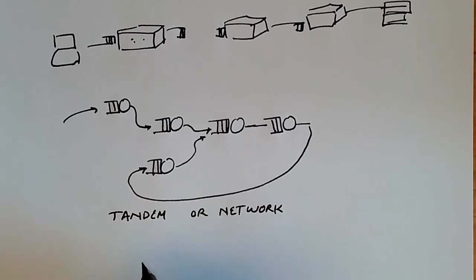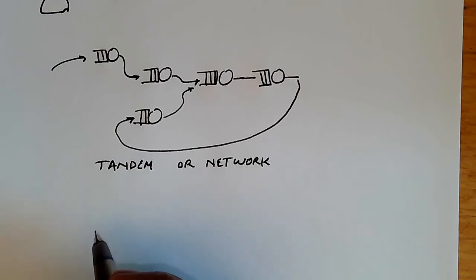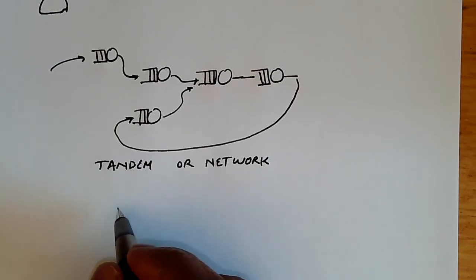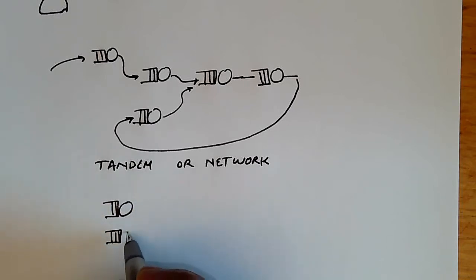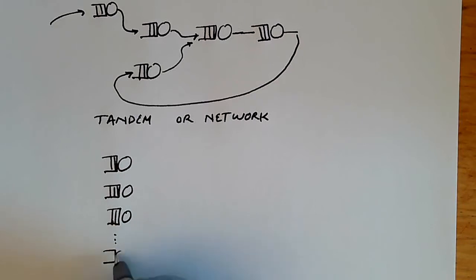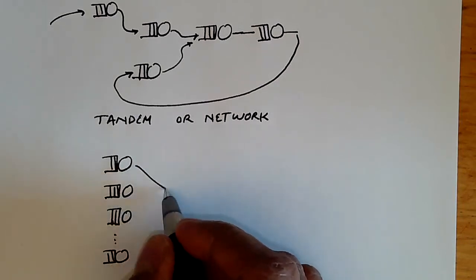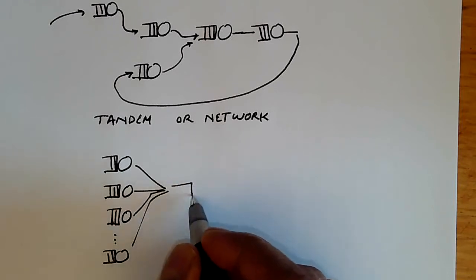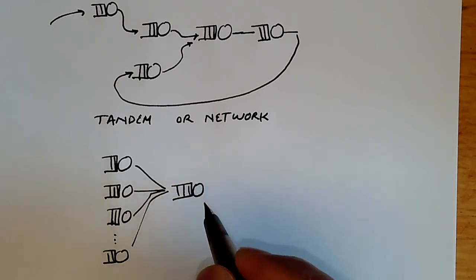If we look at the following system, imagine that we have a set of queues that looks like this. Here's a set of inputs, and maybe there's several of them, and they all are going to be input into another queue like this. Just look at the system over here.